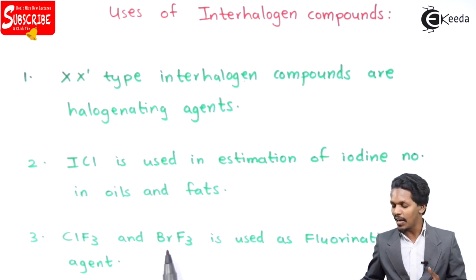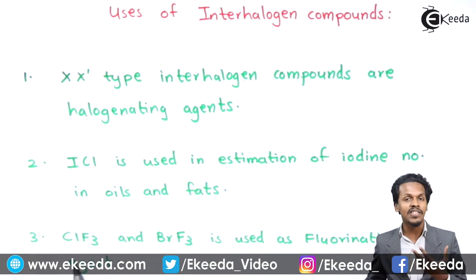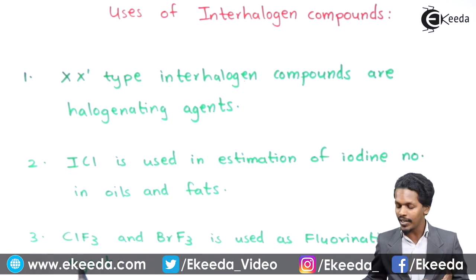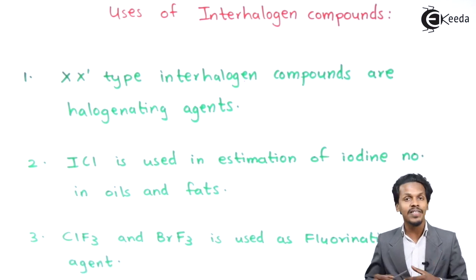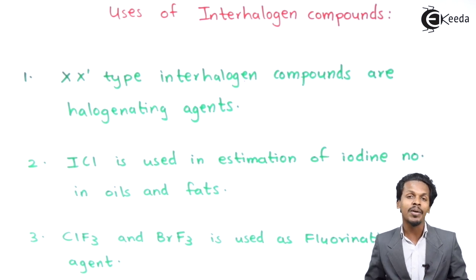The third point is that ClF₃ and BrF₃ are used as fluorinating agents, because they consist of a maximum amount of fluorine, and that is how they can act as fluorinating agents.